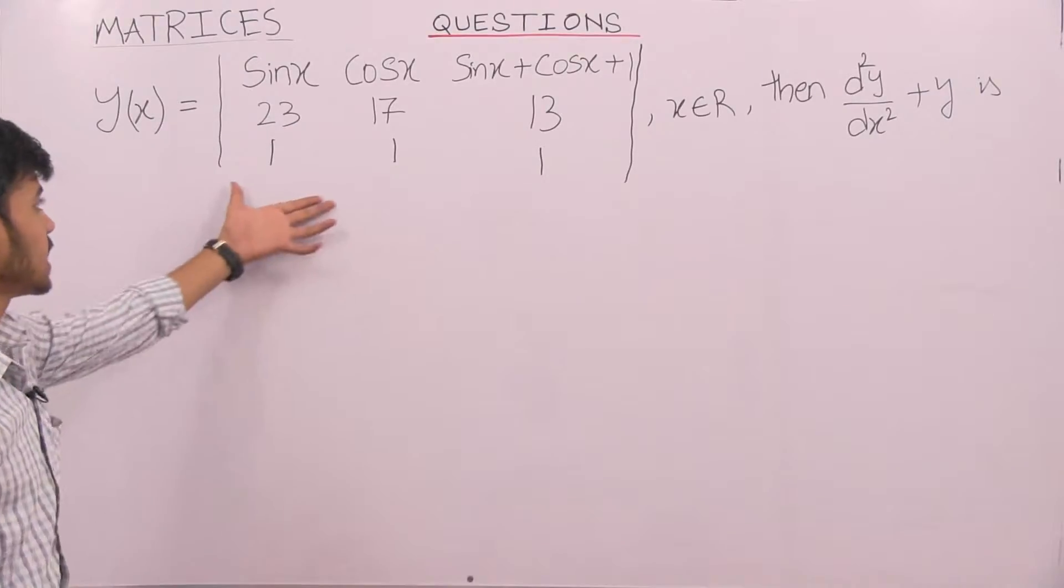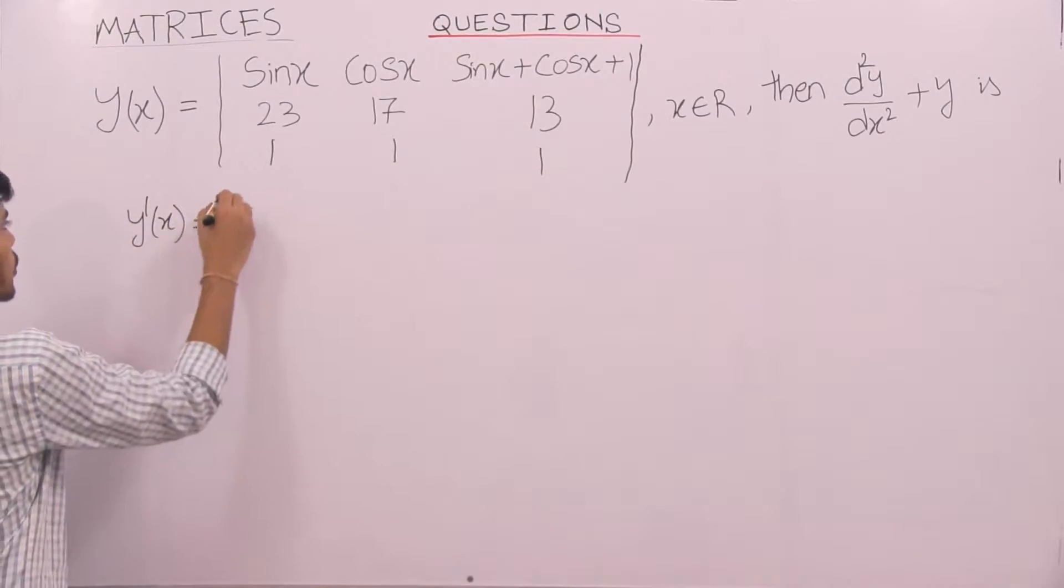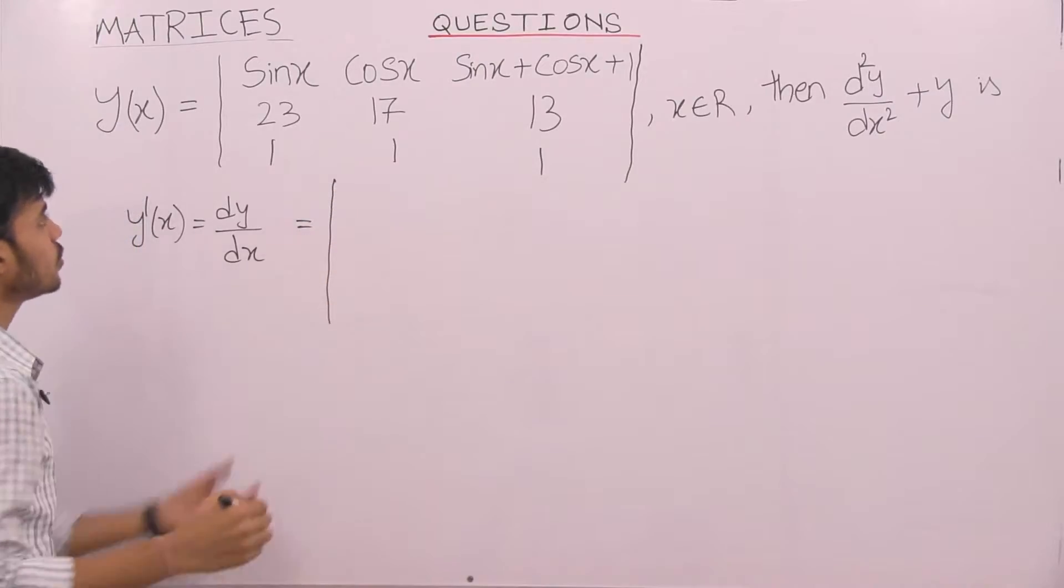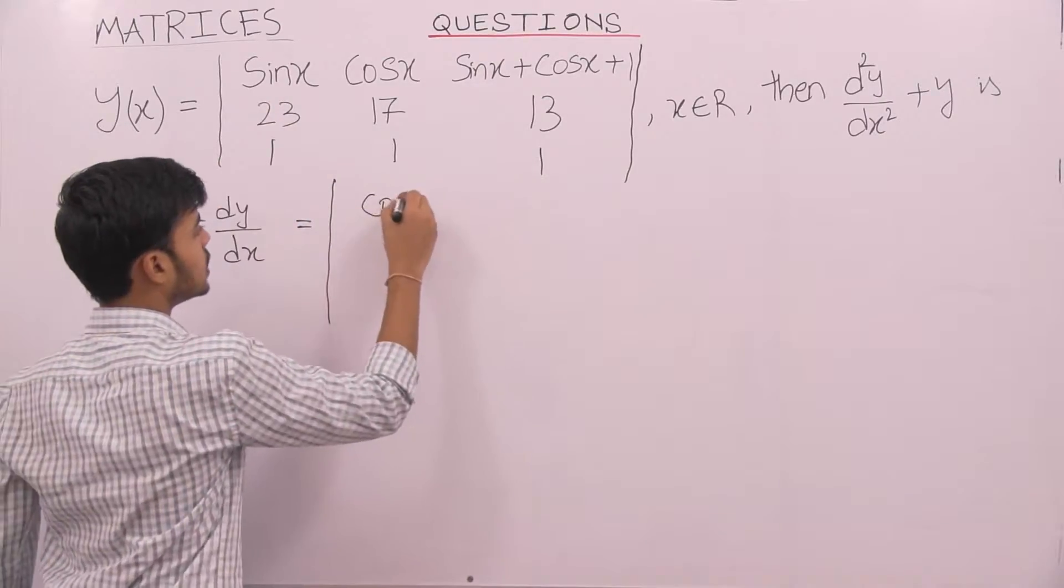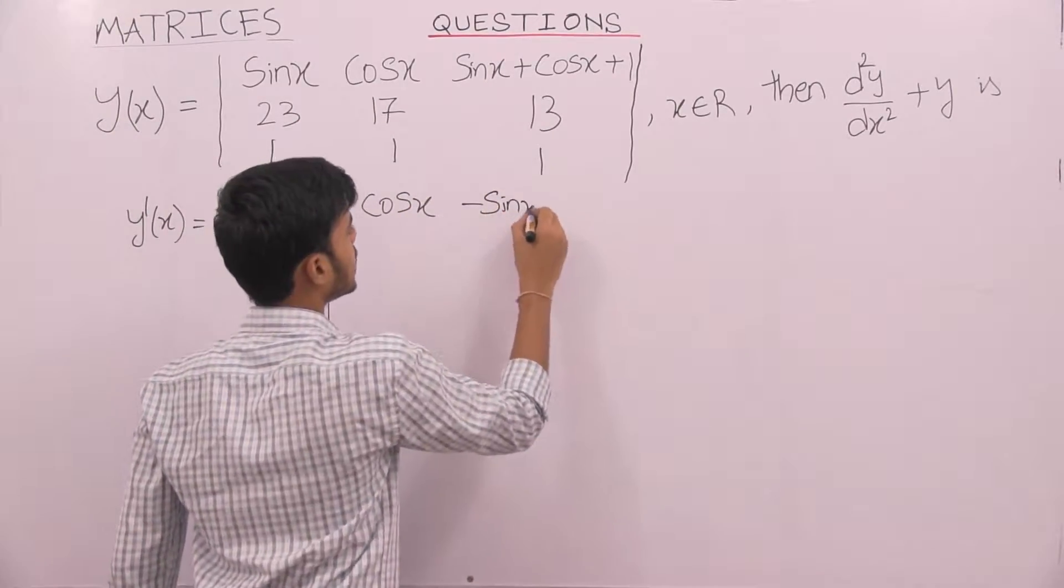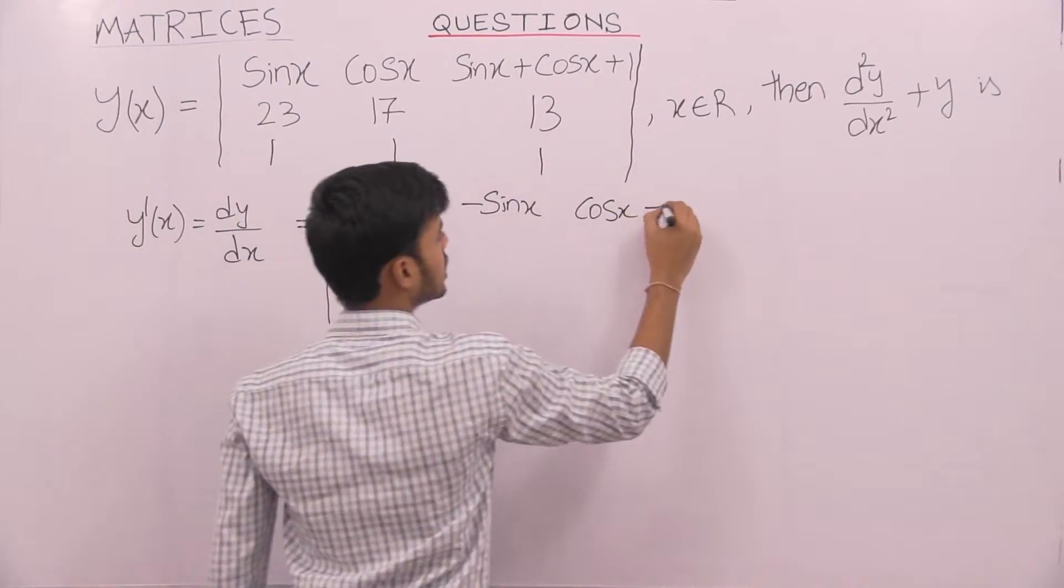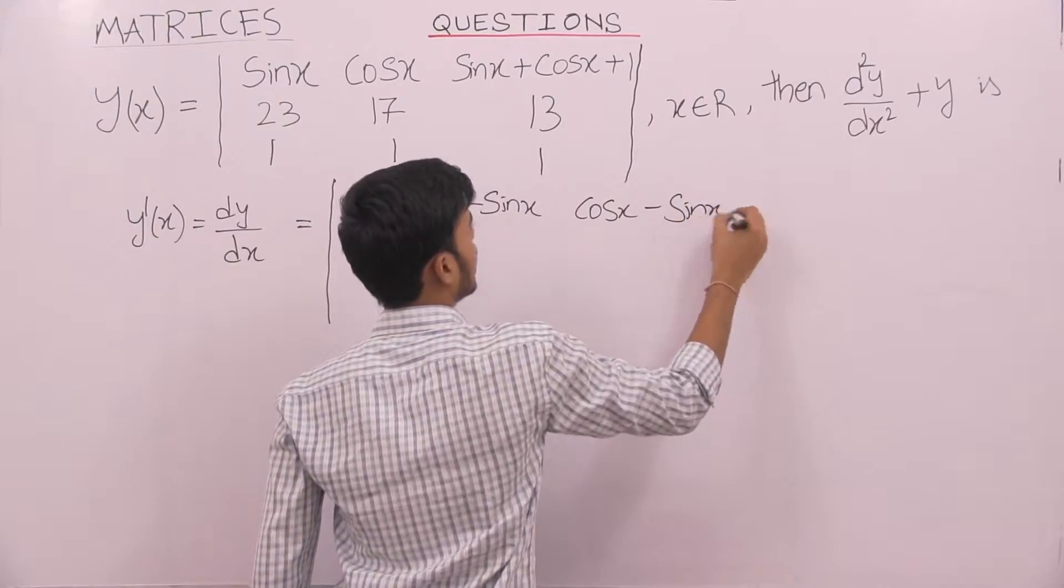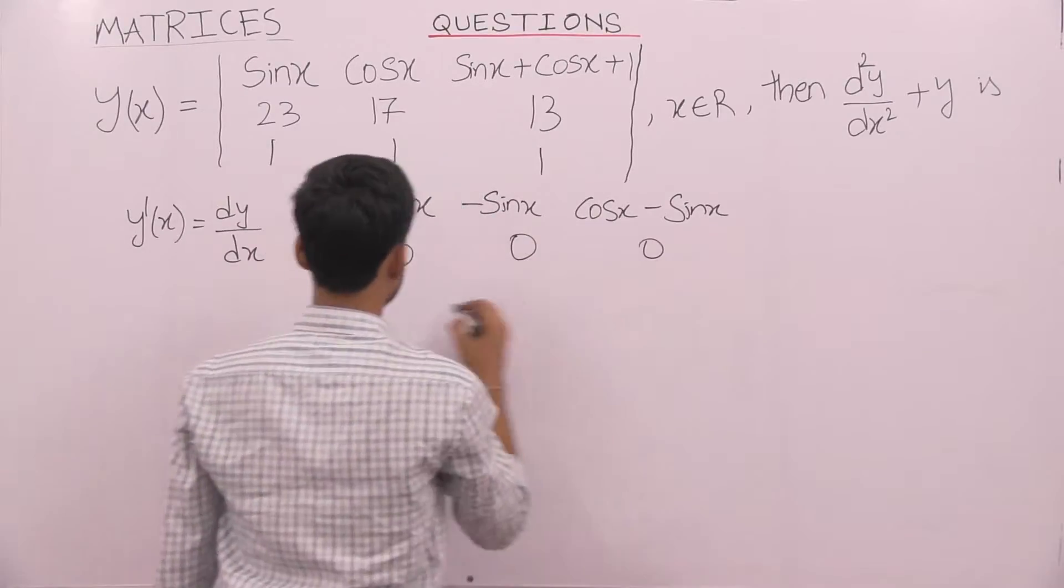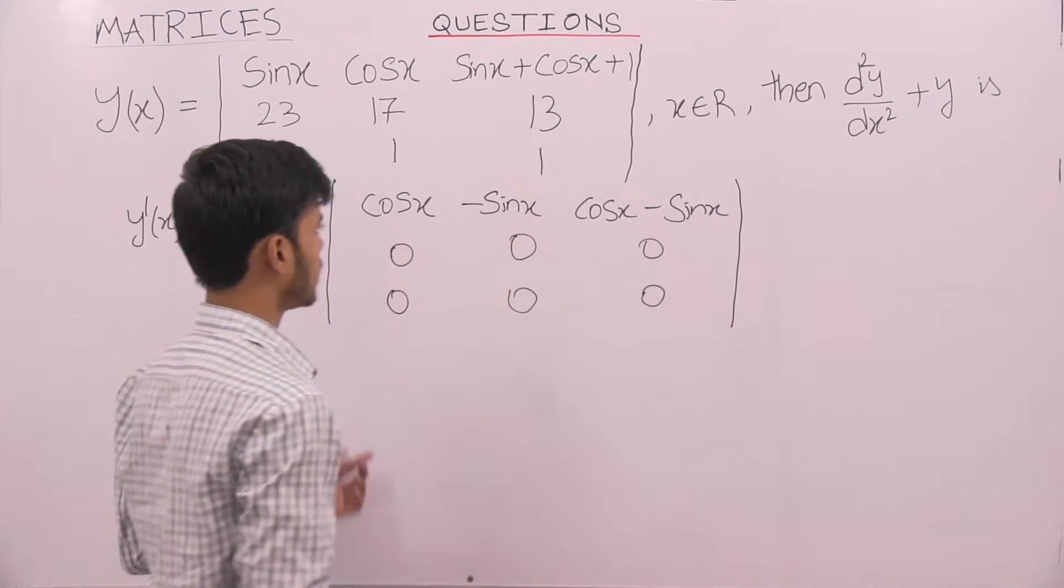Let us directly start by differentiating the given matrix which is y dash of x or dy by dx equals the determinant of derivative of sin x which is cos x, derivative of cos x which is minus sin x, derivative of sin x cos x again derivative of cos x gives us minus sin x and the constant becomes 0, 0, 0, 0 and everything is 0 because we have a constant. Then this is the first derivative.